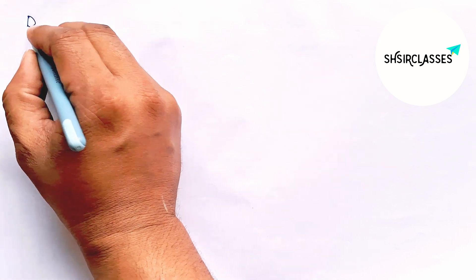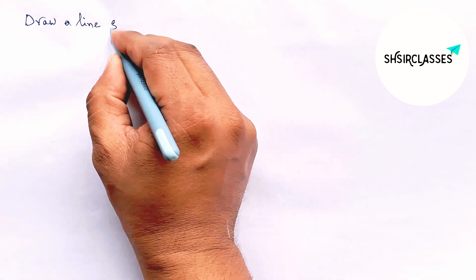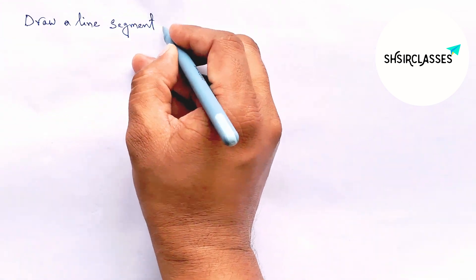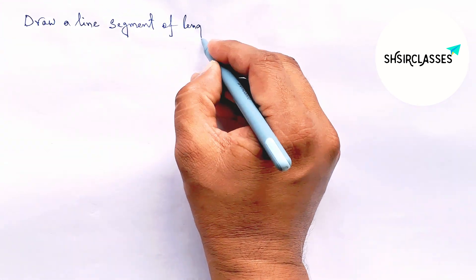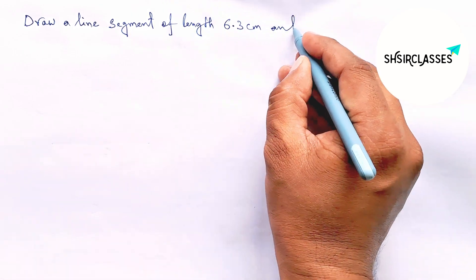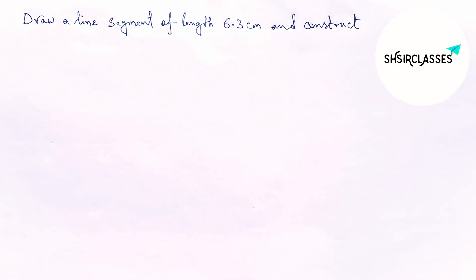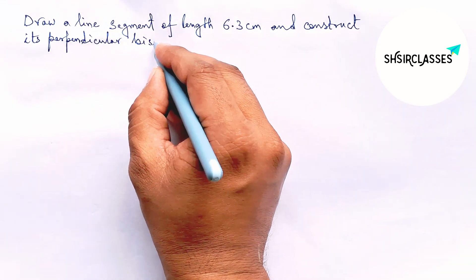Hi everyone, welcome to S Share Classes. Today in this video, draw a line segment of length 6.3 centimeters and construct its perpendicular bisector to the given line in an easy way. Please watch the video till the end.